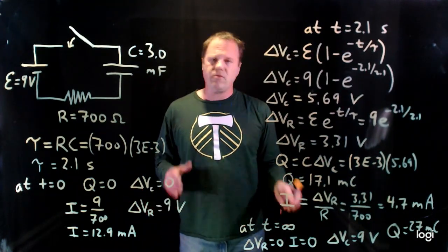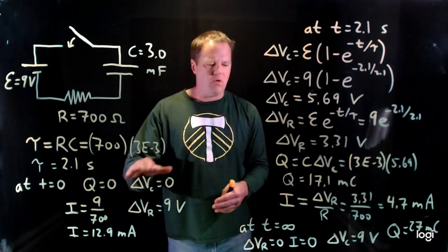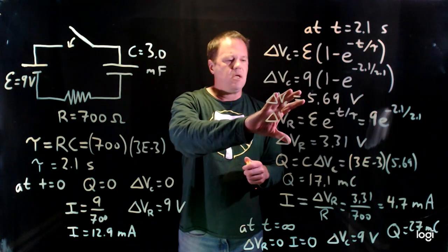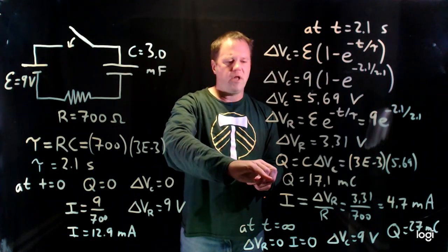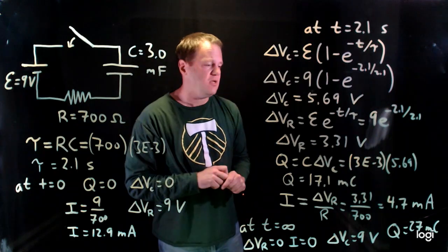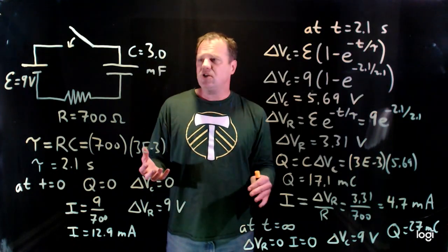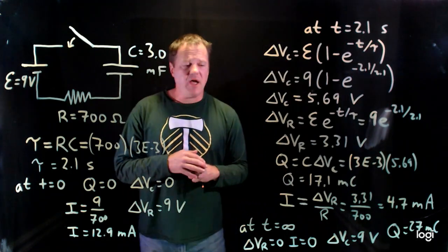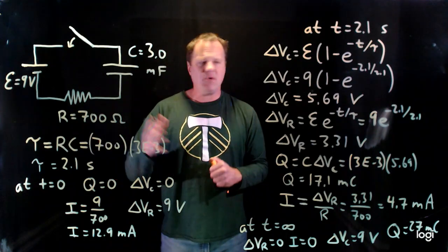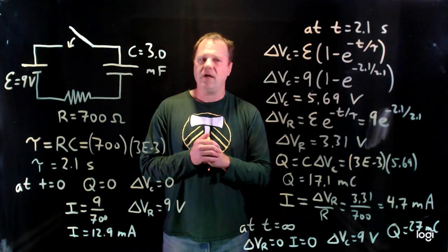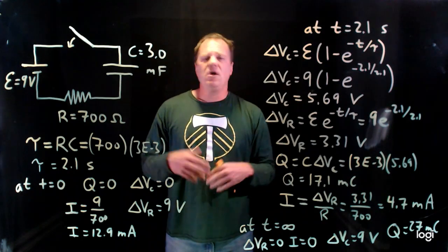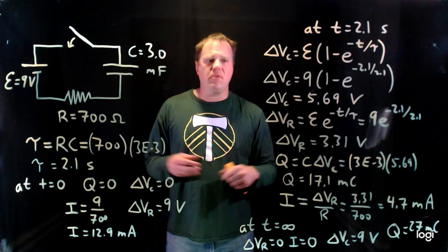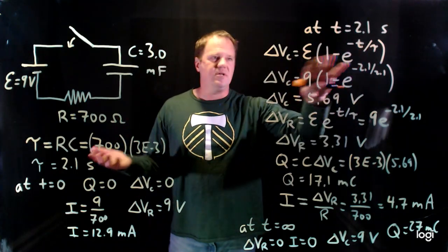Sometimes with RC circuits, whether charging or discharging, we can just make an assertion — some things are zero, or some things are the battery voltage. Other times, at some random point in time, you need to work out the exponential functions and then apply the definition of capacitance or Ohm's law to calculate other quantities. The math for discharging — removing the battery and discharging a charged capacitor through the resistor — looks very similar, with some subtle differences, but the same techniques apply and you still have a time constant. You just have to use the formulas given to you, since the derivation requires fairly advanced math.